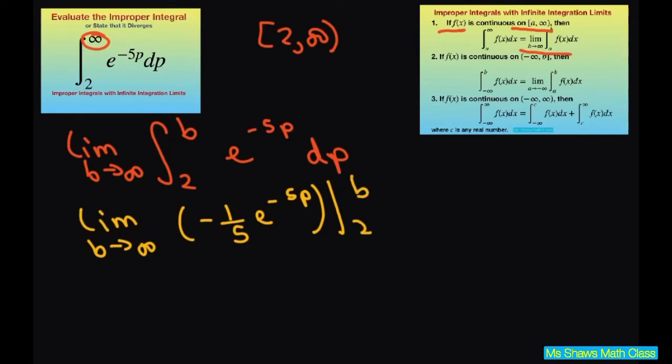Now doing our evaluations we get the limit as b approaches infinity and we're going to have negative 1 fifth e to negative 5b power plus 1 fifth e to the negative 10 power.